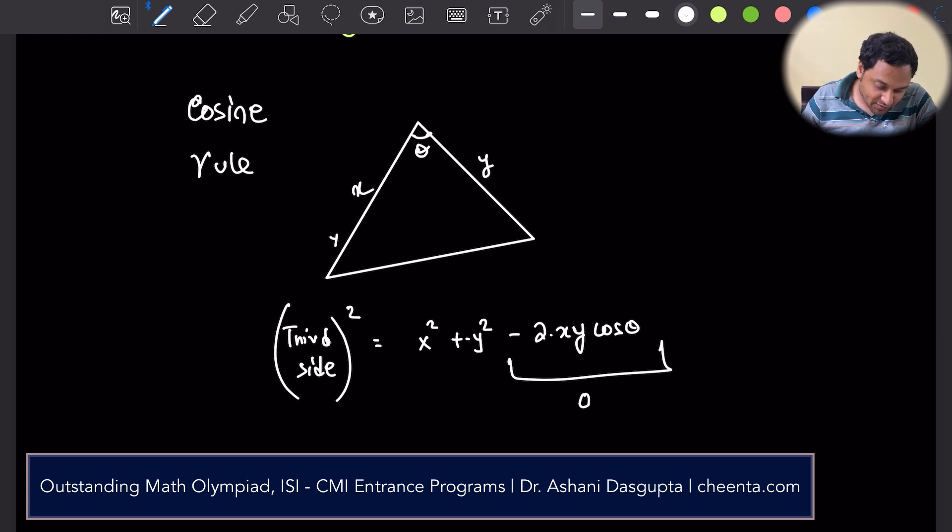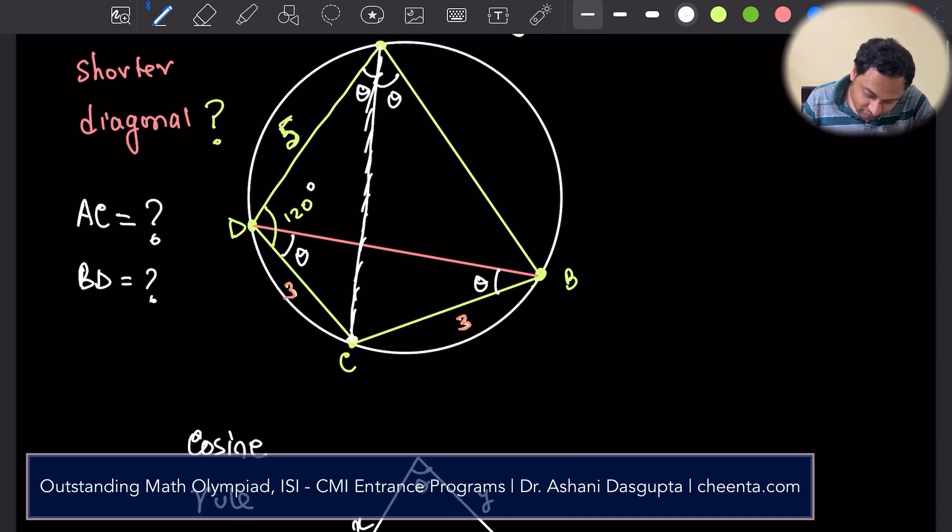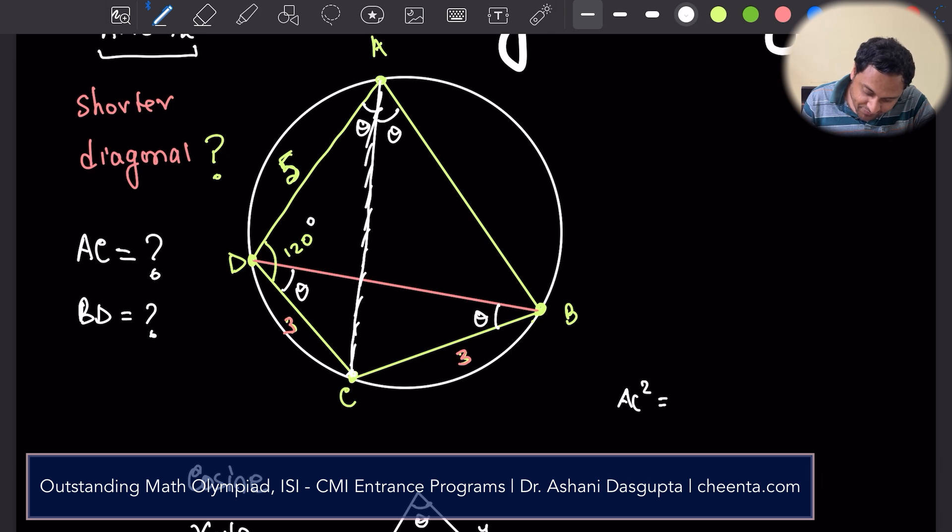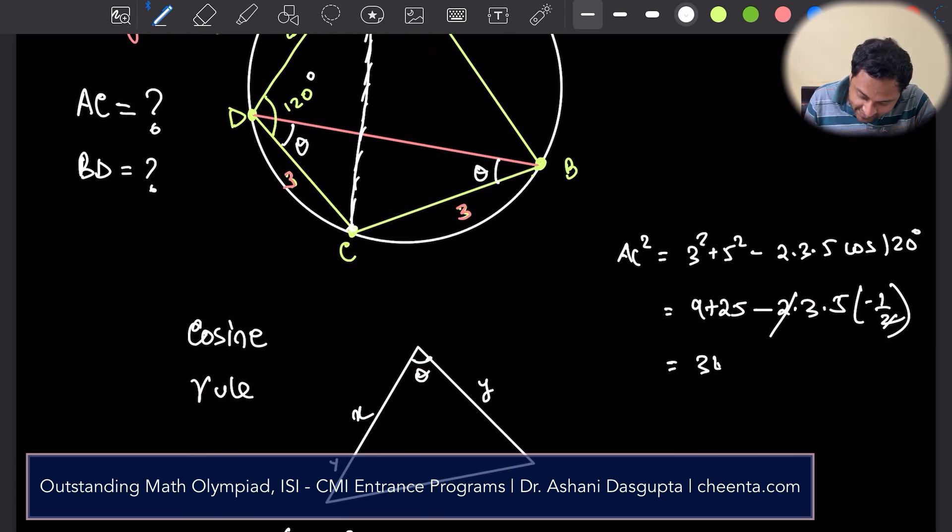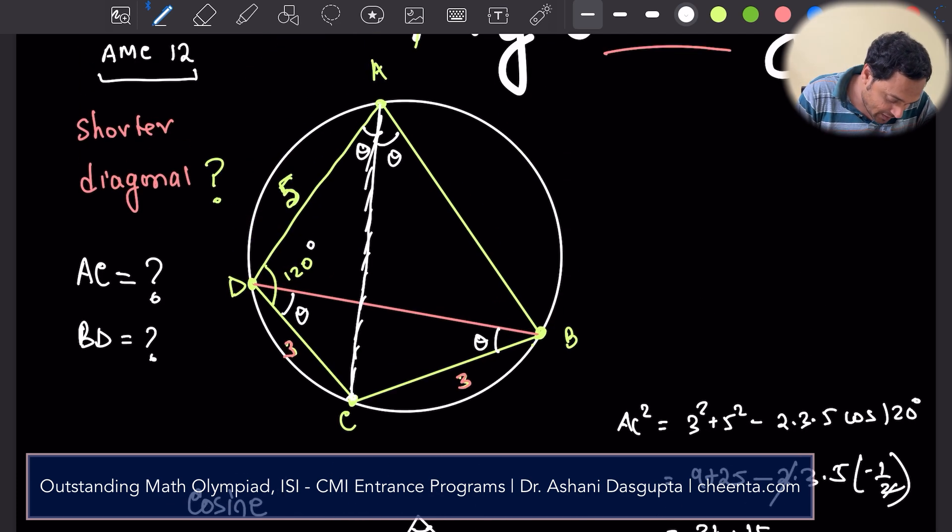So how do we use the cosine rule? Well, in this triangle, we know that this is 5, this is 3, and this is 120. So an easy calculation will show that AC squared is equal to 3 squared plus 5 squared minus 2 times 3 times 5 cosine of 120. Now cosine 120 is negative half. So 9 plus 25 minus 2 times 3 times 5 times negative half. So we have 34 plus 15, which is 49, which tells us that AC is 7. Awesome. It's a whole number. So AC is 7. Great. Part of the job is done.